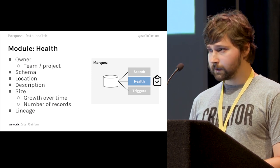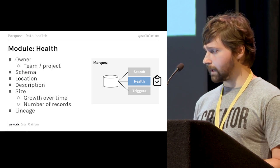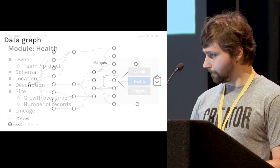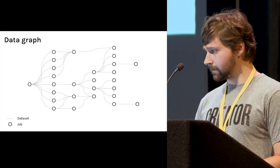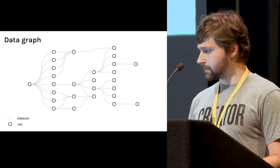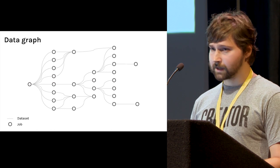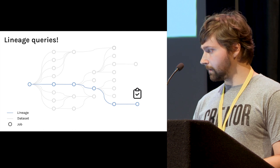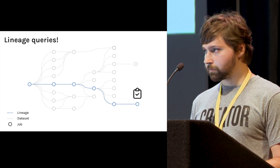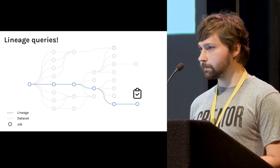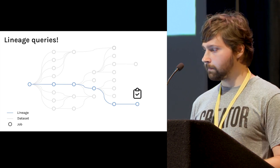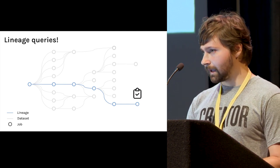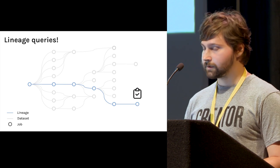The last piece is lineage. Once you have a global view and know what teams own what datasets, you can run lineage queries. In a data graph, nodes represent jobs and edges are containers of data representing datasets. A lineage query looks like: given a dataset, how did I get to this point? What jobs did it go through over time that resulted in the current dataset? You want to know the origin and the transformations that happened.